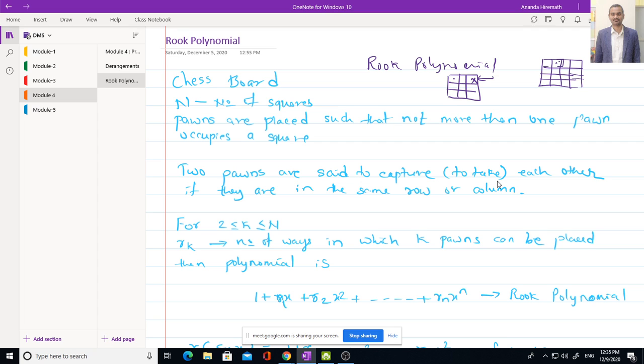So I cannot place at this position. Where I can place so that this pawn cannot capture my pawn? So I can place either here or here or here or here, anywhere, but not in the same row and same column.